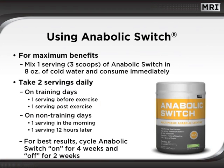For maximum benefits, mix 1 serving of Anabolic Switch in 8 ounces of cold water and consume immediately. Use 2 servings daily. On training days, take 1 serving before exercise and 1 serving post-exercise. On non-training days, use 1 serving in the morning and 1 serving 12 hours later. For best results, cycle Anabolic Switch on for 4 weeks and off for 2 weeks.